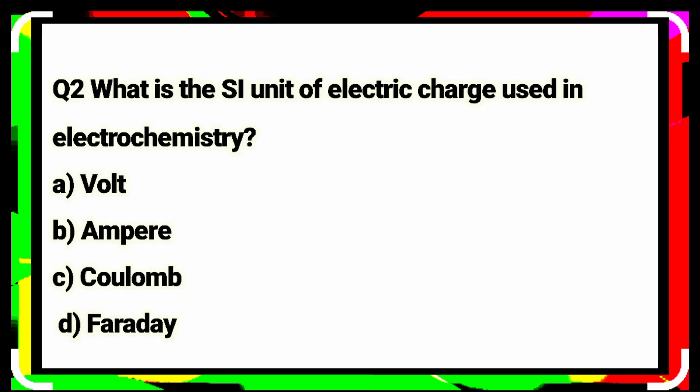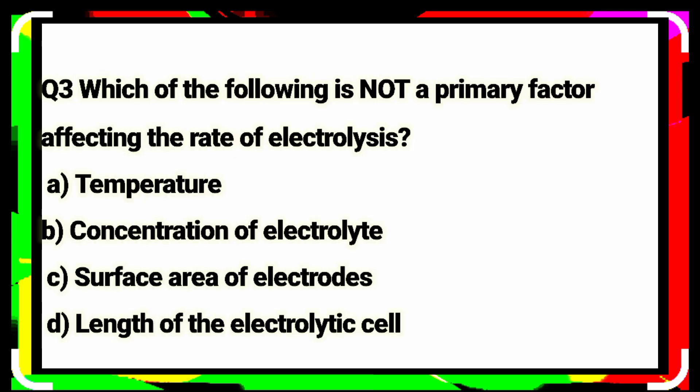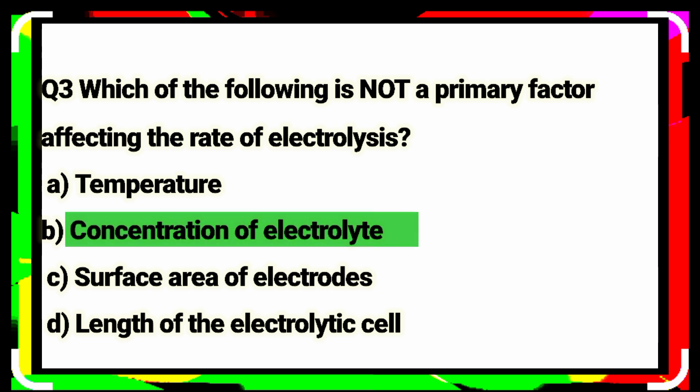Question number two: what is the unit of electric charge used in electrochemistry? Option C is the correct answer. Question number three: which of the following is not a primary factor affecting the rate of electrolysis? Concentration of electrolyte. Option B is the correct answer.